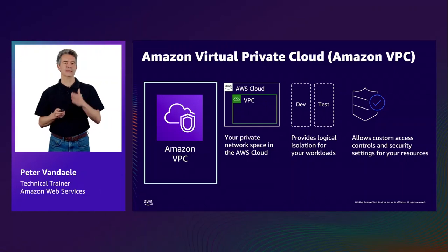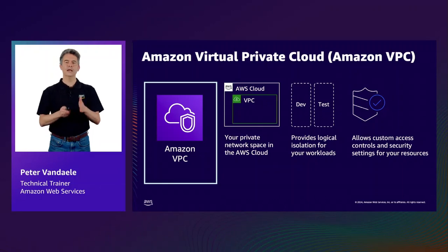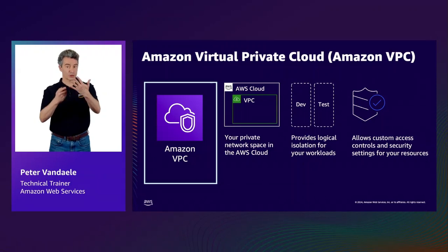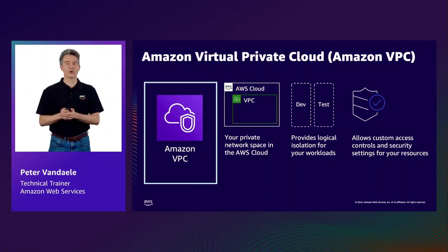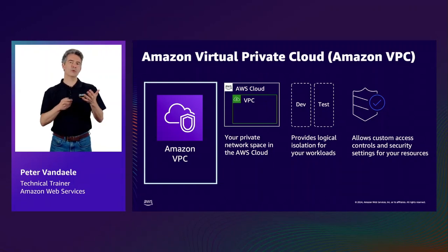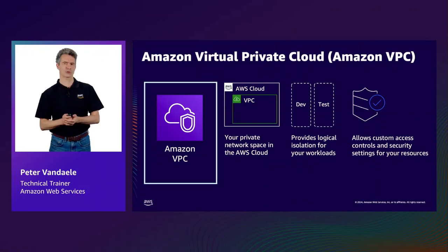VPC is a service that allows you to create your own private space within the AWS cloud — a logically isolated virtual network. You can use multiple VPCs to logically separate your workloads. For example, you could have separate VPCs for each environment, such as development, test, and production environments, or based on different teams in your company. VPCs help you control the flow of your traffic, and it's very common for companies to have hundreds of VPCs.